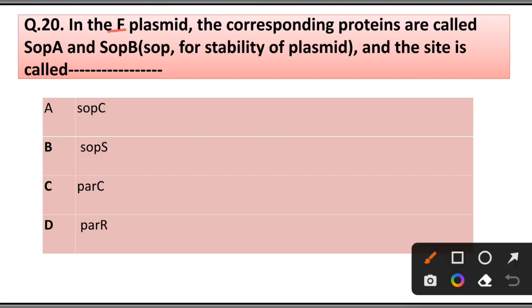Question number 20: In the F plasmid, the corresponding proteins are called SopA, SopB (Sop for stability of plasmid) and the site is called sopC. Answer is option C.